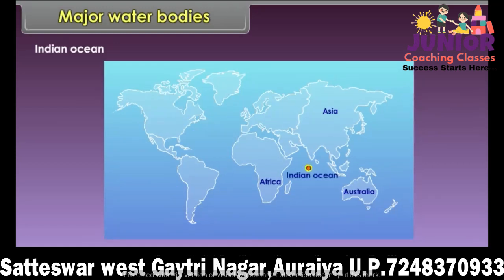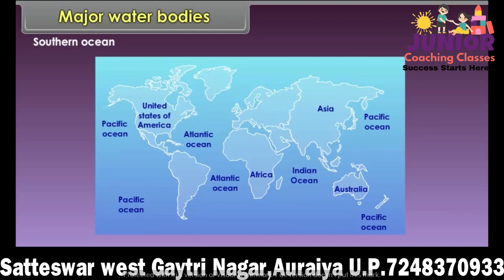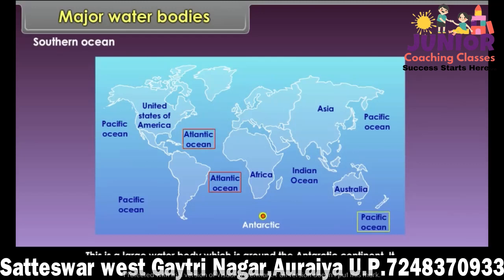Indian Ocean is often called half an ocean. It is encircled by Africa, Asia, and Australia. It is a small ocean and does not open northwards. The deepest trench of the Indian Ocean is the Sunda Trench. Southern Ocean is a large water body around the Antarctic continent. It merges with the Pacific, Atlantic, and Indian Oceans.